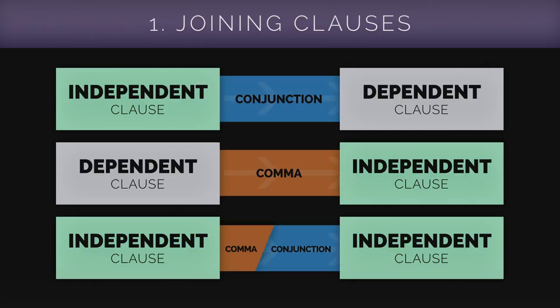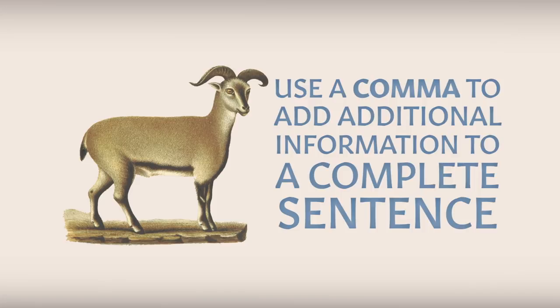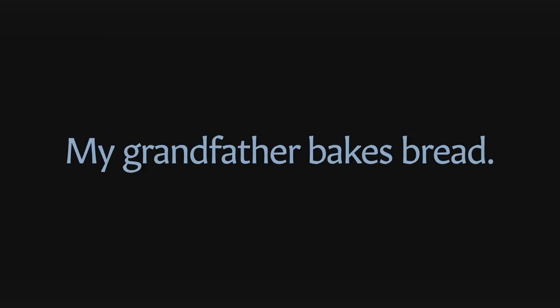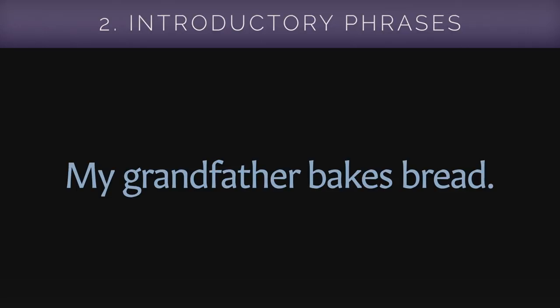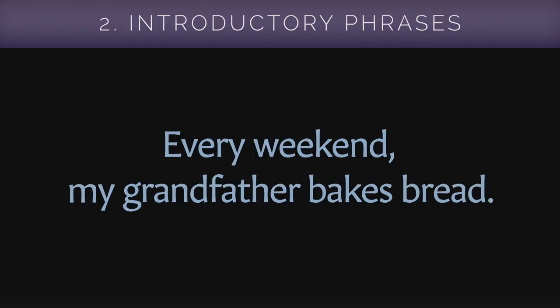Aside from combining clauses, commas are useful when adding additional information to an otherwise grammatically correct sentence. Let's start with this simple sentence: "My grandfather bakes bread." This is acceptable, but more information can be given to make the sentence more complex. A comma can be used to add an introductory phrase to clarify when he bakes bread — you can add "every weekend" to the beginning as long as a comma is included. Introductory phrases are very useful for clarifying when, where, or how something occurs. Introductory adverbs have the same rule, such as beginning your sentence with "surprisingly."